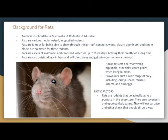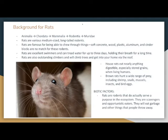Background for rats. Rats are in the kingdom Animalia, the phylum Chordata, the class Mammalia, the order Rodentia, and the family Muridae. Rats are various medium-sized long-tailed rodents, famous for being able to chew through things like soft concrete, wood, plastic, aluminum, and cinder blocks.